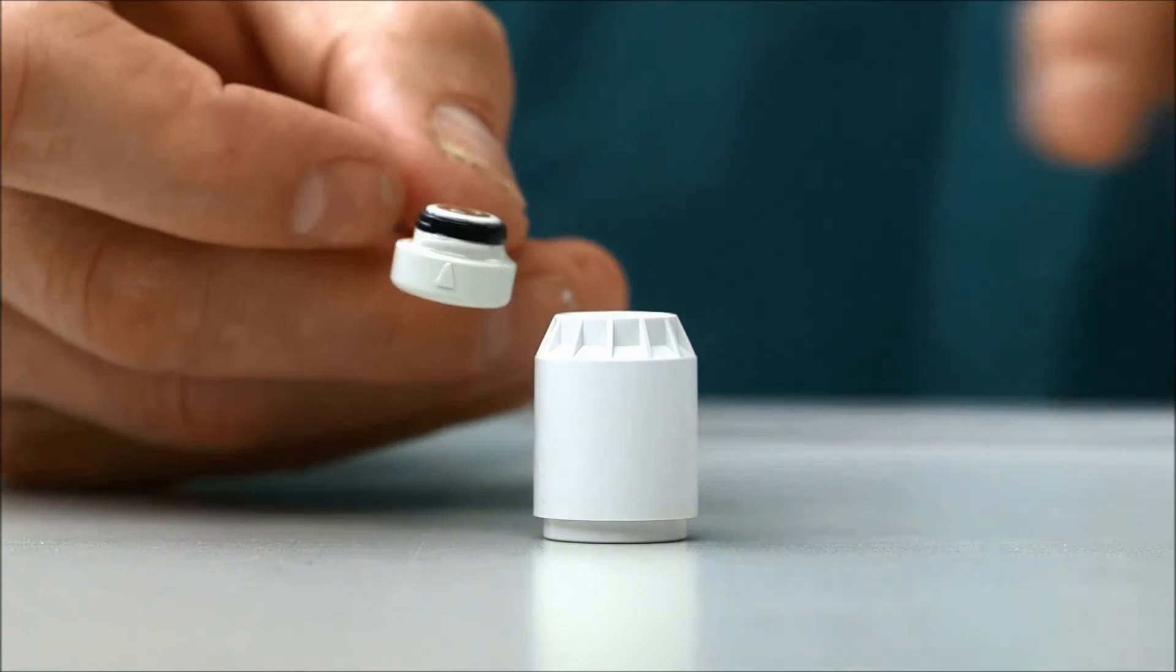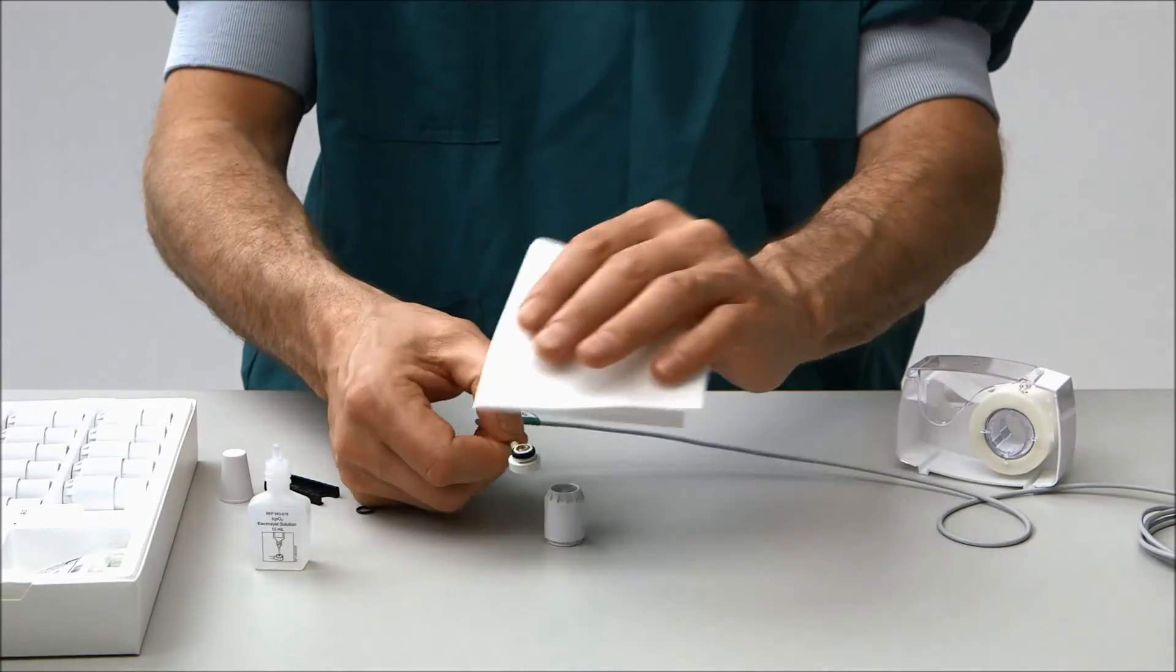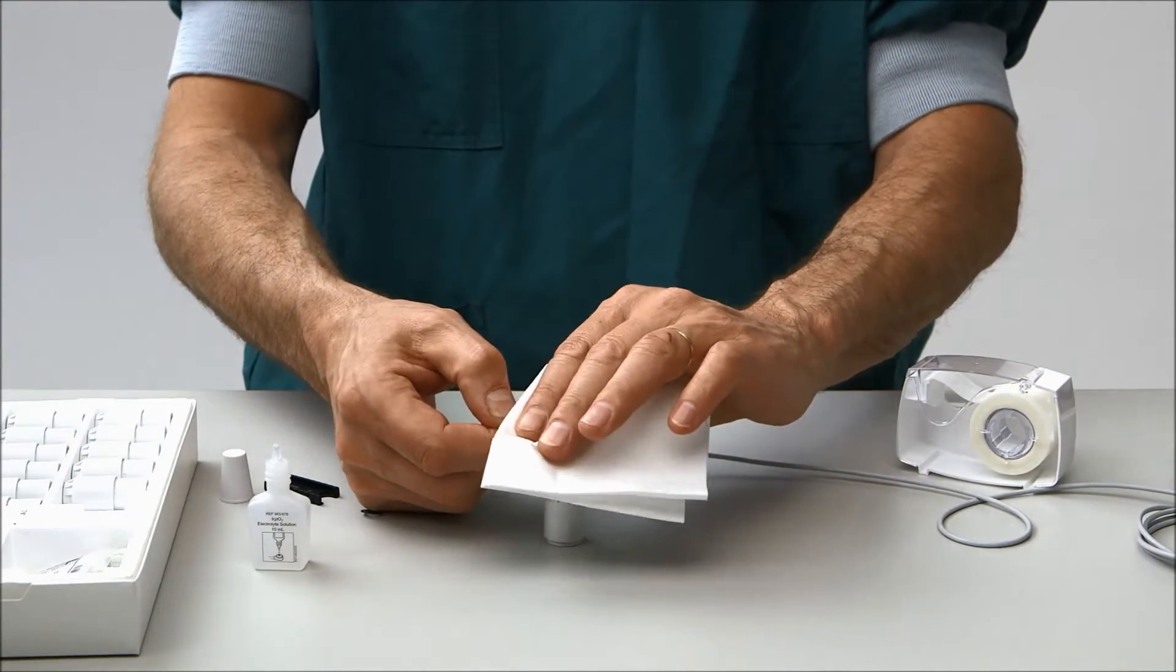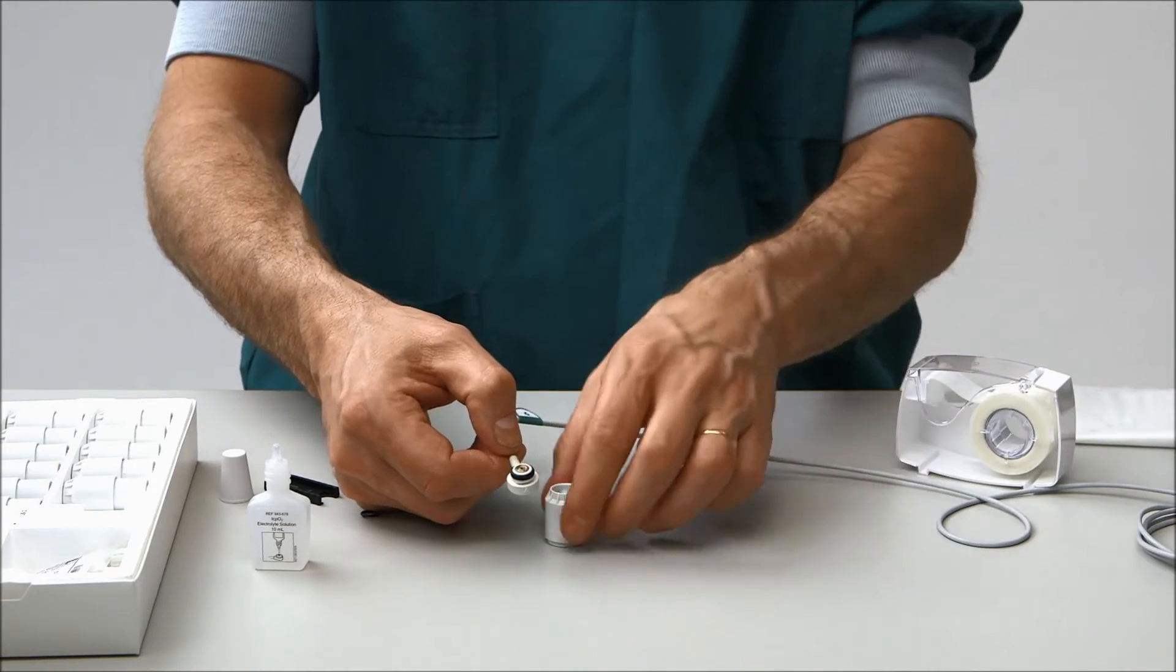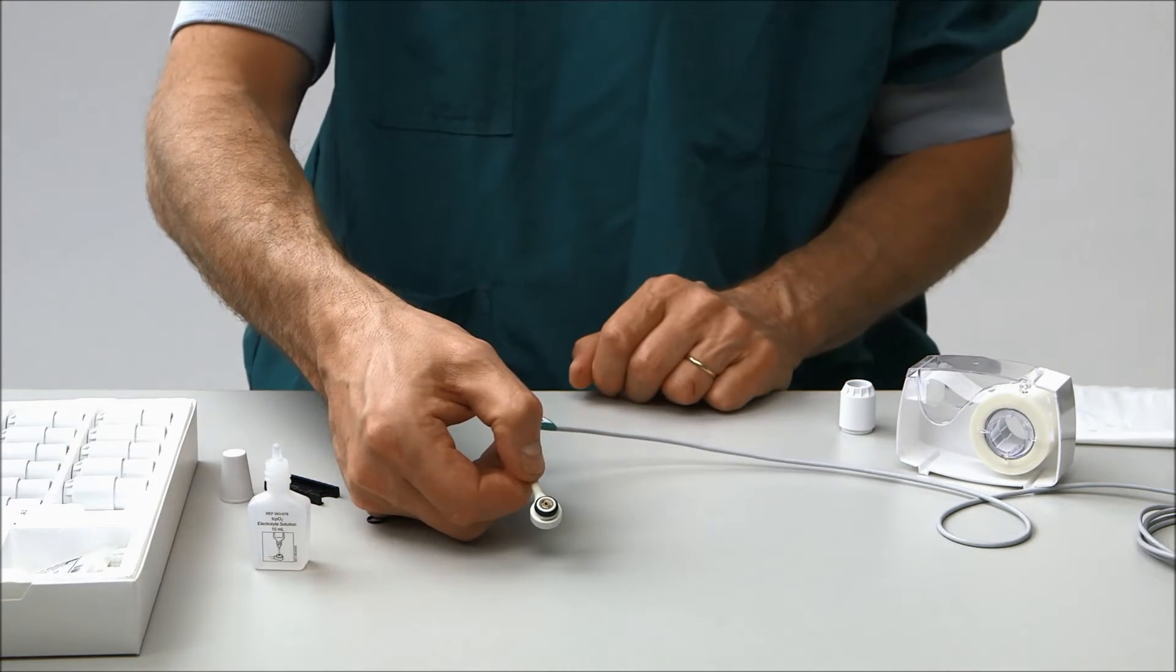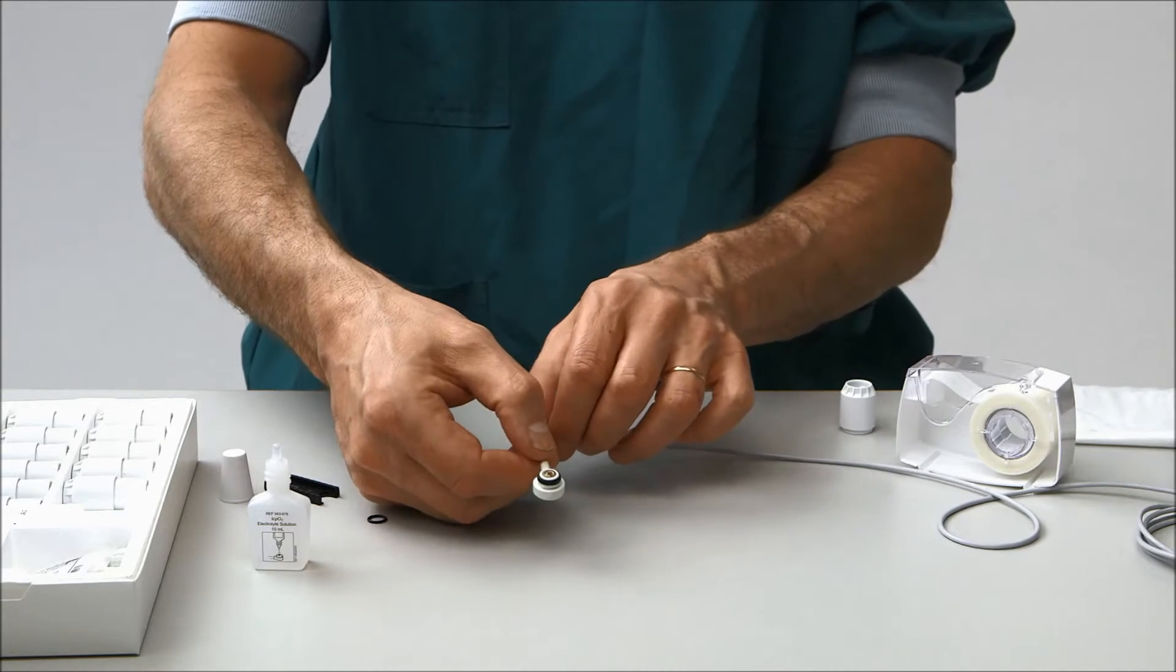Remove the electrode and wipe off any surplus electrolyte with a soft tissue. Inspect the electrode to make sure that there are no air bubbles. Place the electrode in the electrode holder.